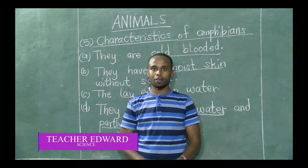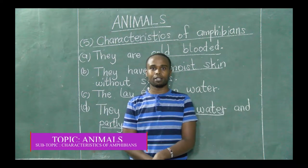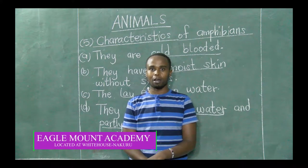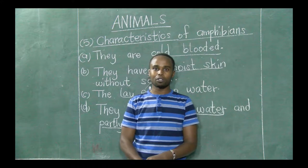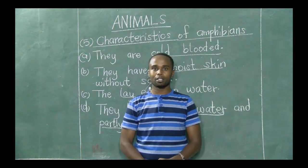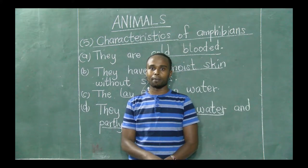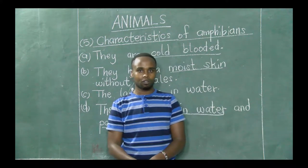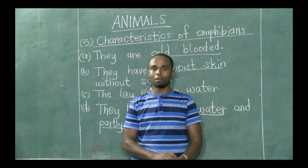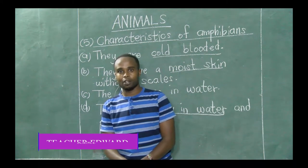Hi, pupils. This is teacher Edward. Welcome back. Today I want us to continue the subject that is science. We are looking at animals. I want us to summarize the characteristics of vertebrates. Remember, we have addressed the four groups of vertebrates. Today I want us to look at the last one. Last time we looked at mammals, birds, reptiles, and fish. Today I want us to sum up with the last group, which is amphibians, and look at their characteristics. By the end of this, you'll be able to give me some examples of those amphibians.